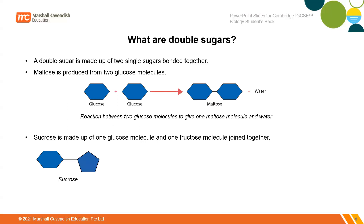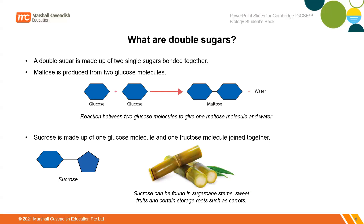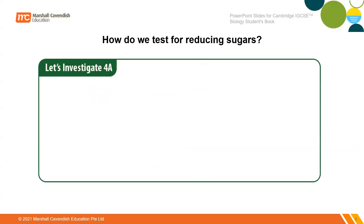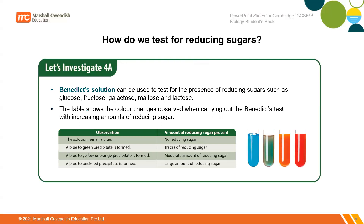Sucrose is table sugar and is made up of one glucose molecule and one fructose molecule bonded together. The first test we need to revise is the Benedict test, or the test for reducing sugars. Reducing sugars include glucose, fructose, galactose, and maltose — any kind of sugar except polysaccharides.